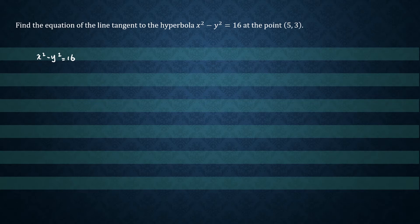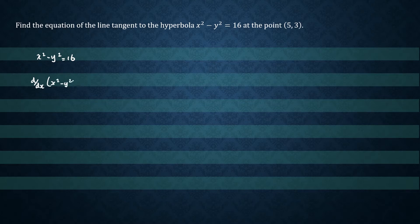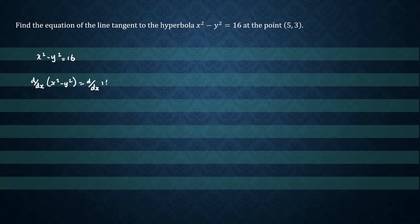What we do now is differentiate both sides. So we have d/dx of x squared minus y squared equals d/dx of 16. When we differentiate x squared, we'll get 2x.